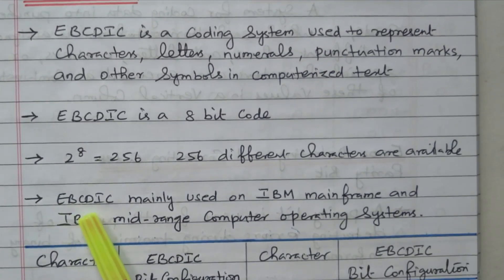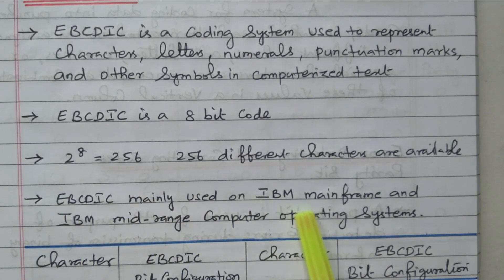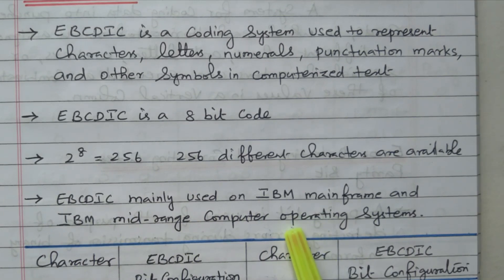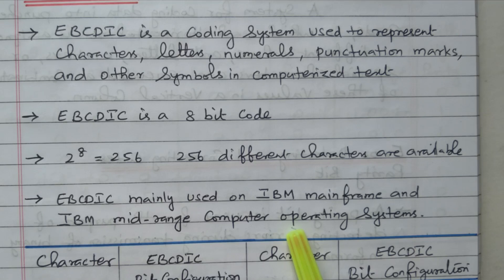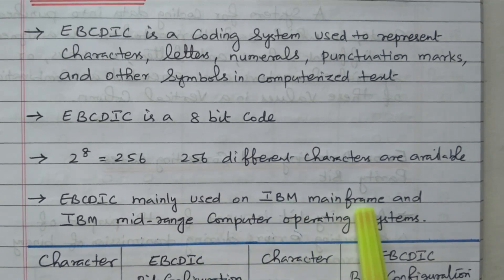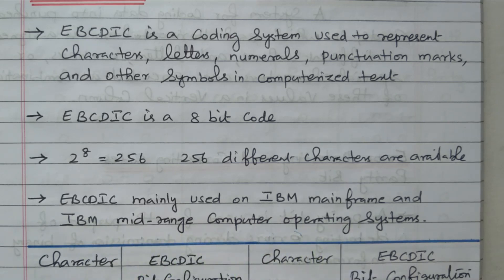EBCDIC is mainly used on IBM mainframe and other IBM mid-range computer operating systems. The ASCII code is normally used in all computers — the keyboard we are using is represented by ASCII code covering 128 characters. This Extended Binary Code, EBCDIC, is mainly used in IBM mainframe and other IBM mid-range computer operating systems.